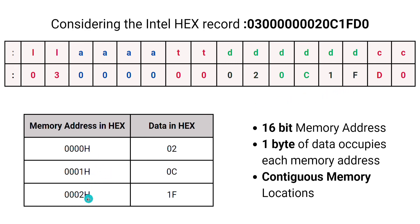The subsequent data bytes are allocated in sequential memory addresses. The next byte of data, 0C, occupies address 0001H, and the final byte of data, 1F, occupies address 0002H. Hence each memory address is occupied by one byte of data.